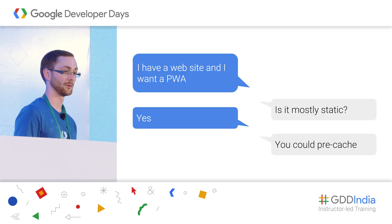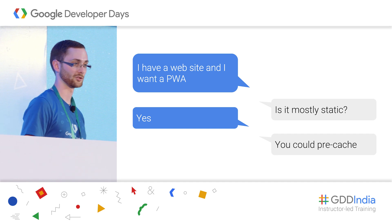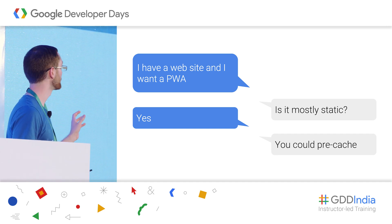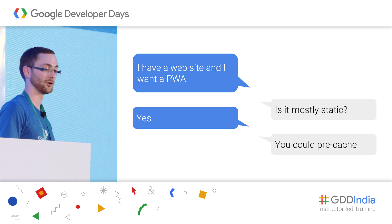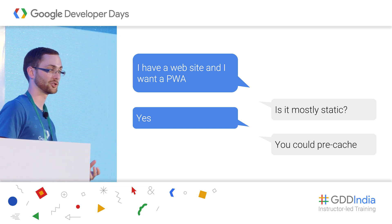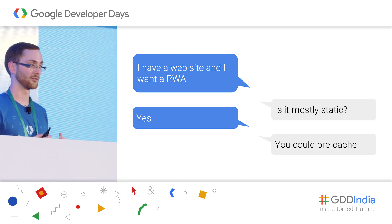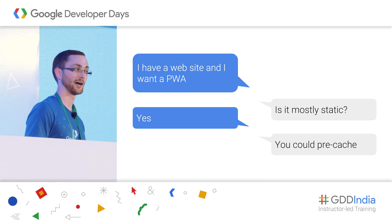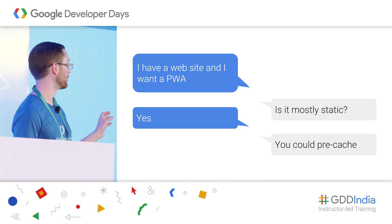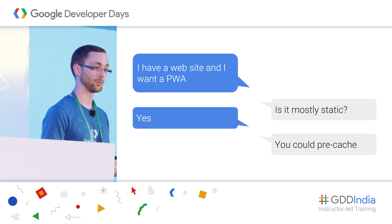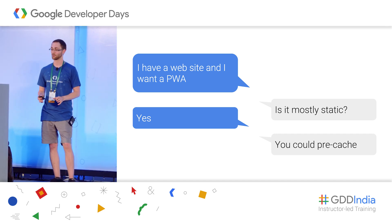Let's start with the simplest situation and move to more advanced situations from there. The first and most simple situation is if you have a static site — meaning your assets don't change that much for different users, and you're not doing a lot of dynamic third-party API calls or anything like that.